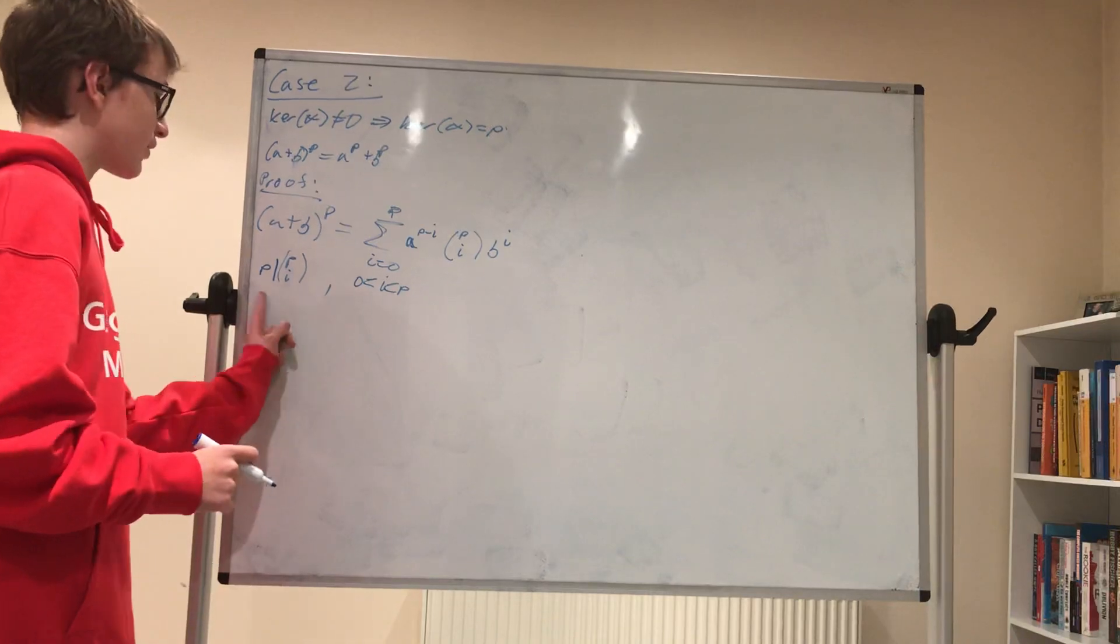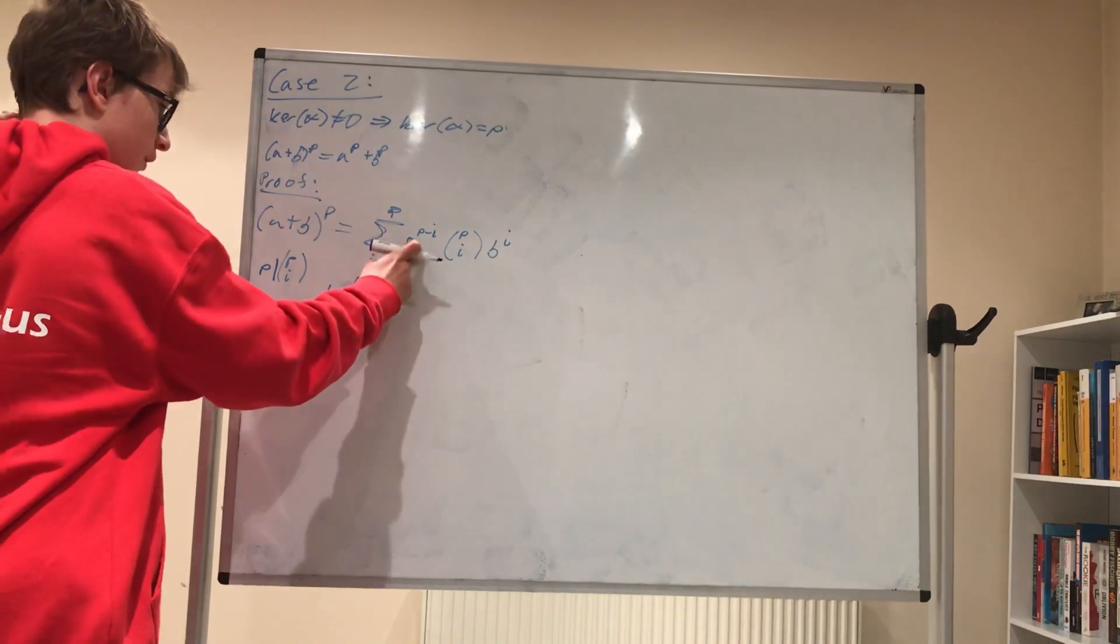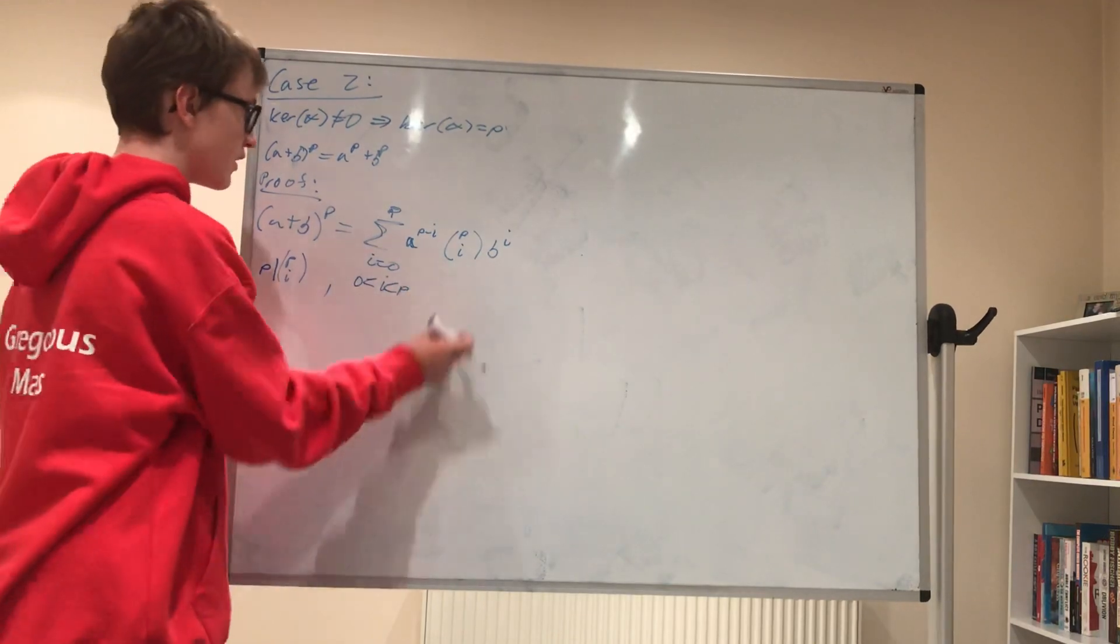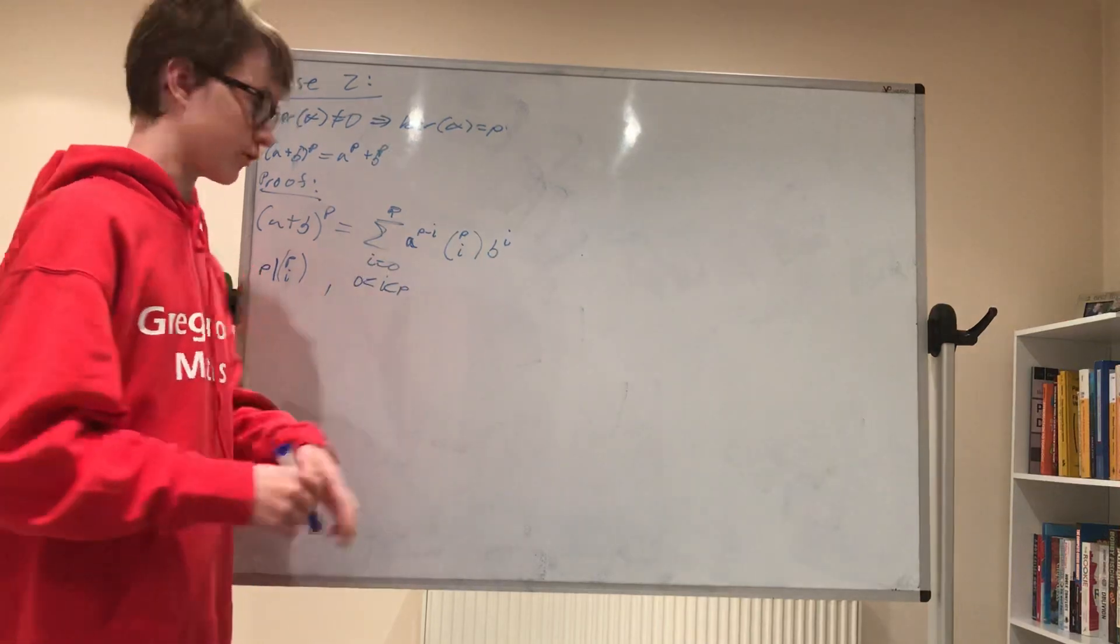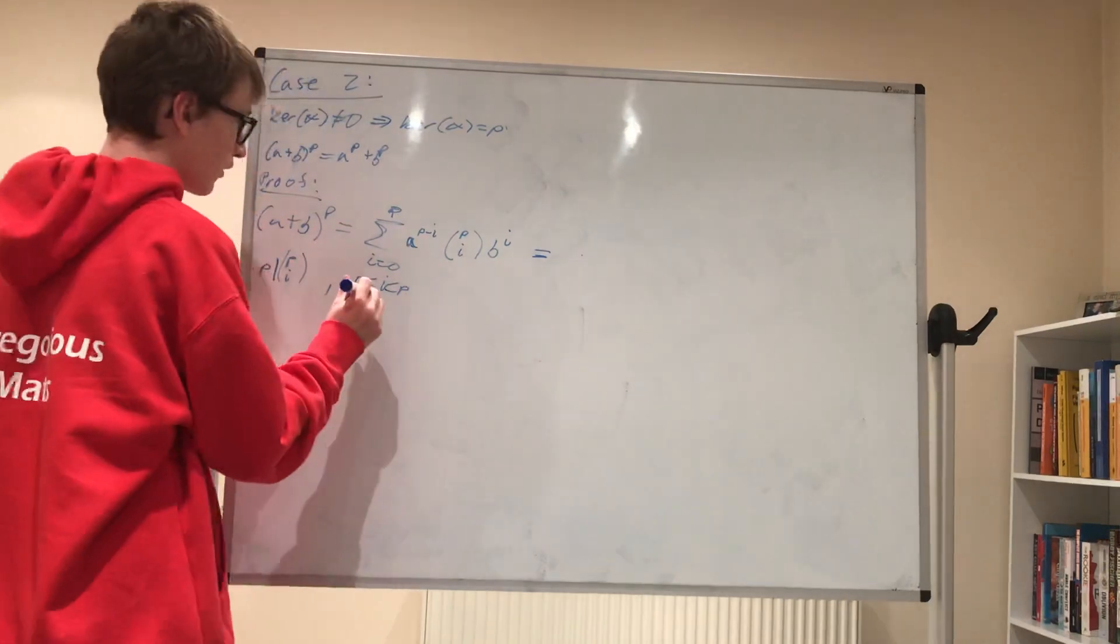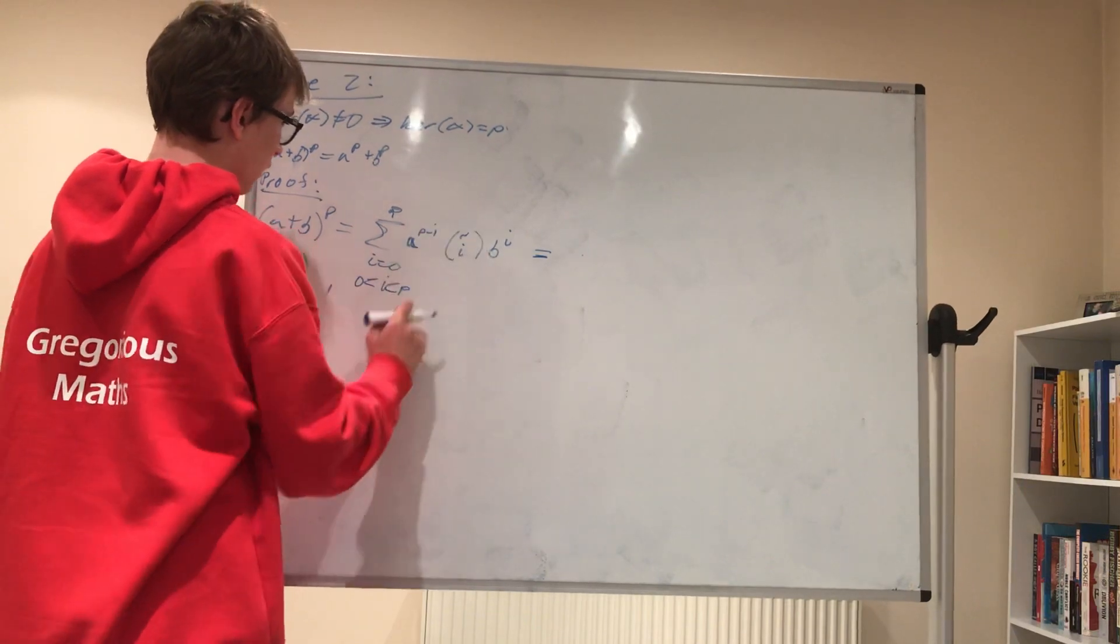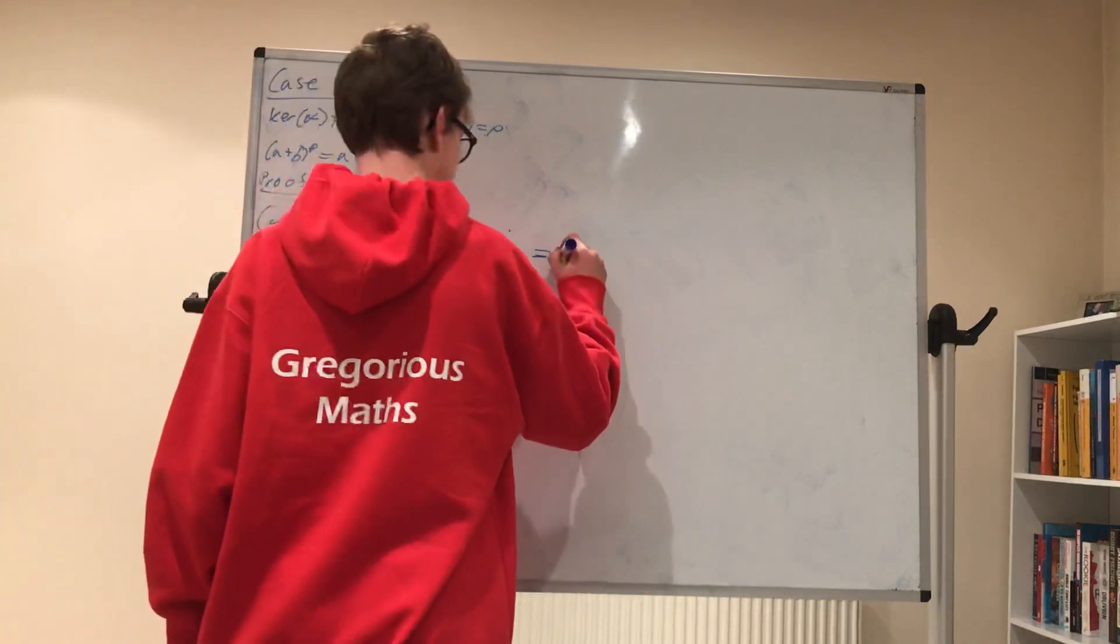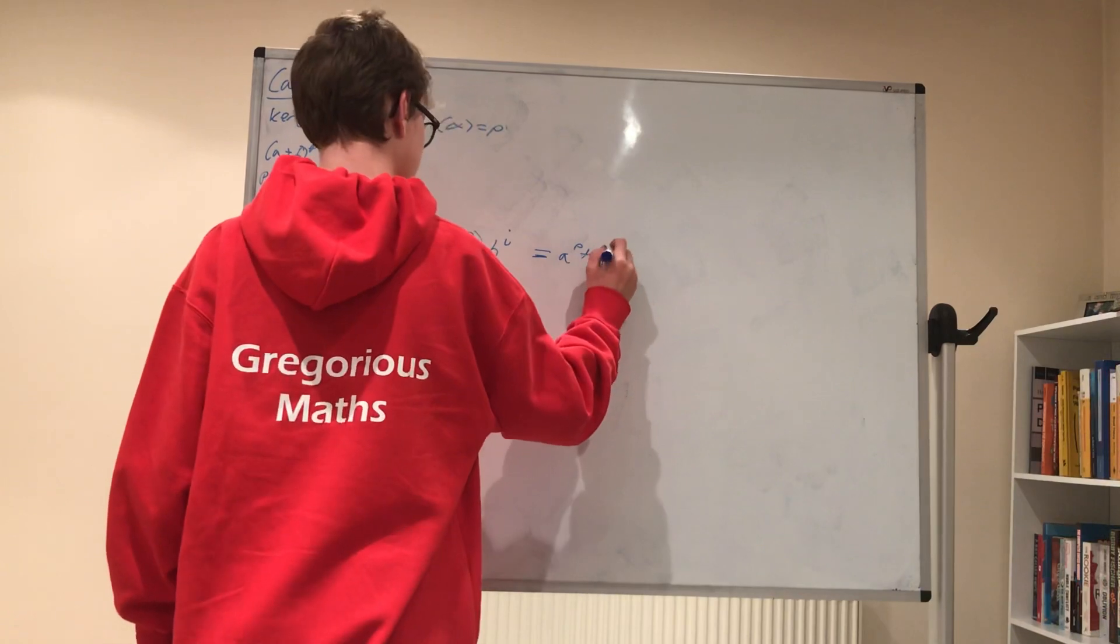And so all of these elements right here are just going to be zero because if it's a multiple of p, it's just going to be zero times something which is always going to be zero. And so the only terms that will survive are the ones where this is one basically, and that is the first and the last term. So it's going to be a to the p plus b to the p.